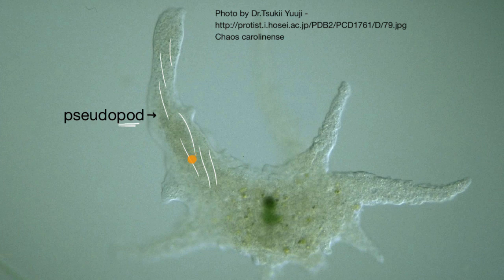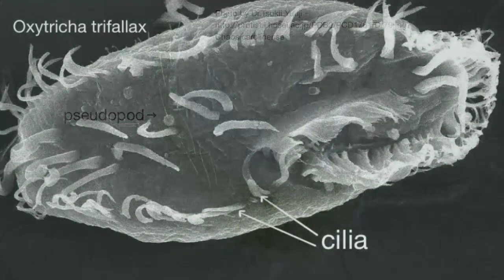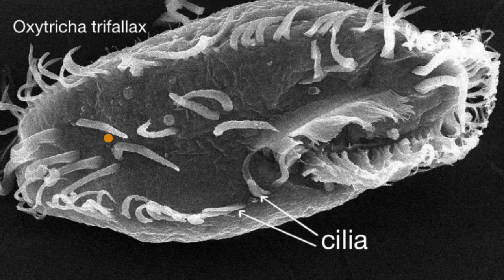Another structure you will often see on unicellular organisms that helps them move around, or even move other things around, is cilia. This right over here is a picture of Oxytricha trifallax, which is a unicellular eukaryote. You can clearly see these hair-like projections from its body.